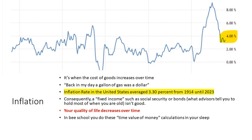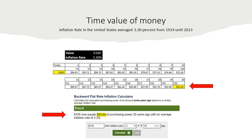A fixed income such as Social Security or bonds — what your advisors tell you to hold most of — what happens to that as you age? Your quality of life decreases over time. In business school they teach you to do time value of money calculations in your sleep. I've simply taken $100 today, plugged in the inflation rate of 3.3% — the erosion of our money over time — and we're going to see how long it takes for our money to half. Here you can see that in around 20 years, our money has nearly halved.